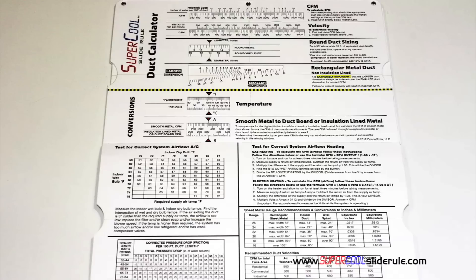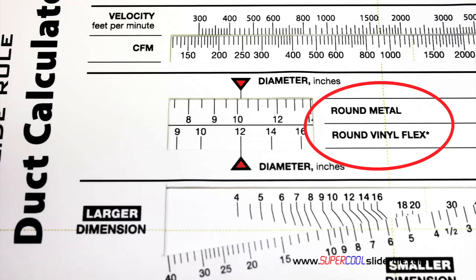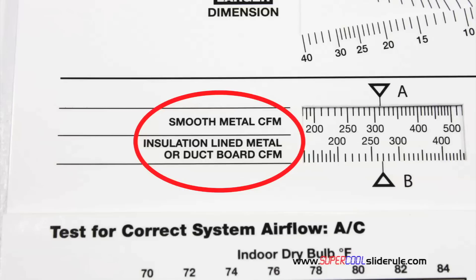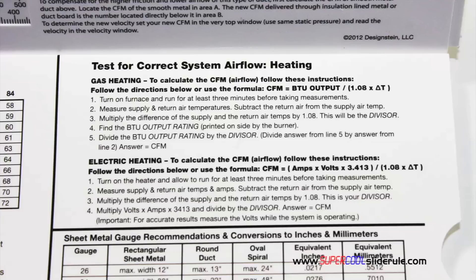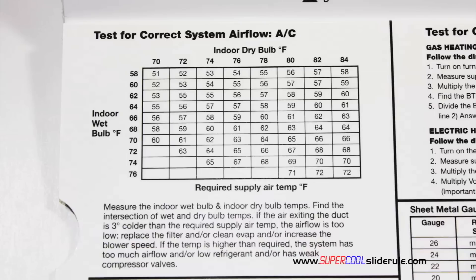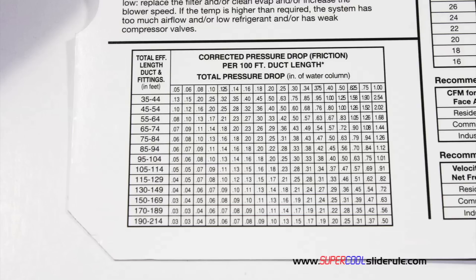Inside is packed with even more information. It performs sizing of both metal and flexible duct. It has the only direct reading conversion from smooth metal to insulation-lined metal we've ever seen. The majority of technicians have never been taught that if the insulation is on the inside of the ductwork, you cannot size it with a regular duct calculator. It has step-by-step directions for determining airflow through a gas furnace, electric furnace, or an air conditioning unit. It has pressure drop multipliers for ductwork as well as recommended velocities.